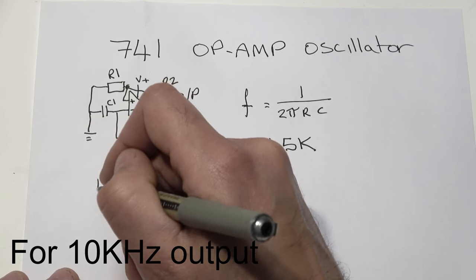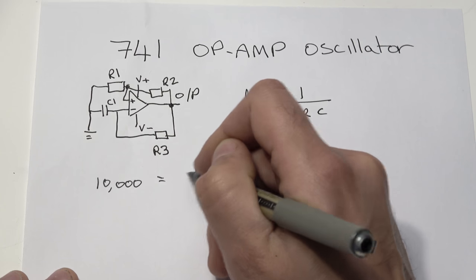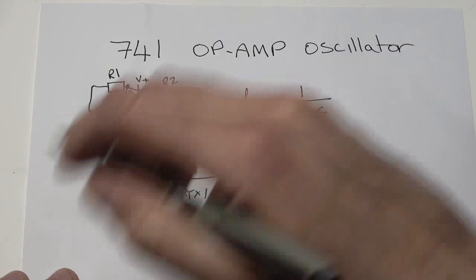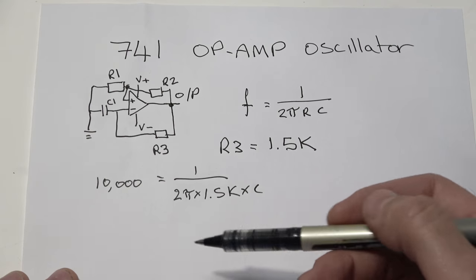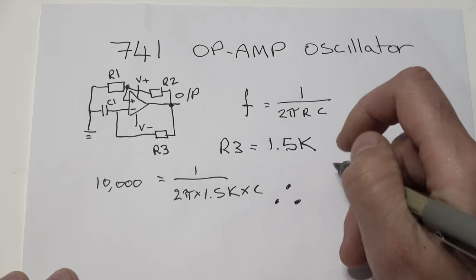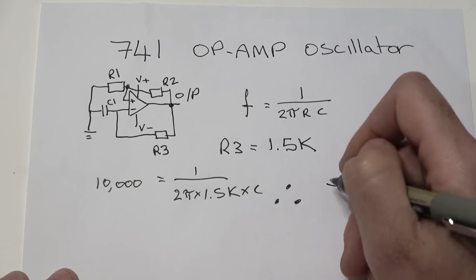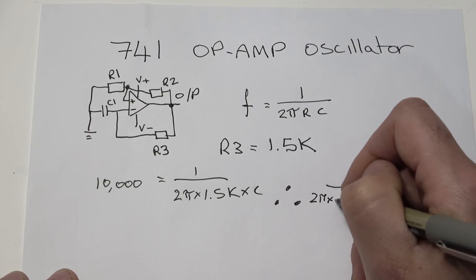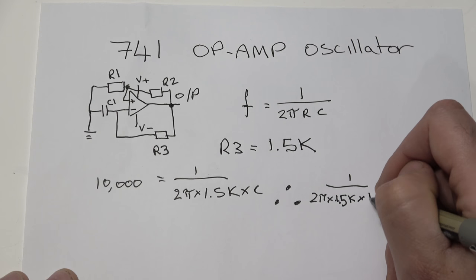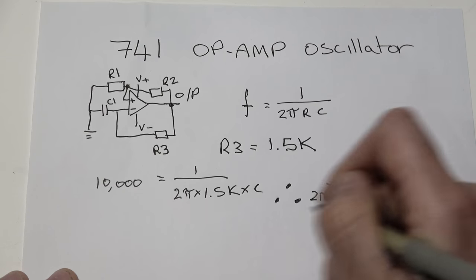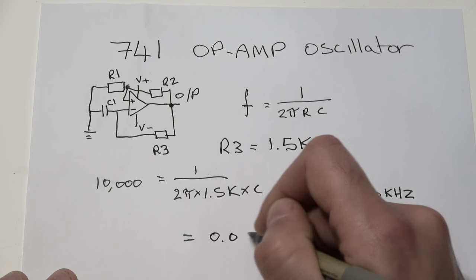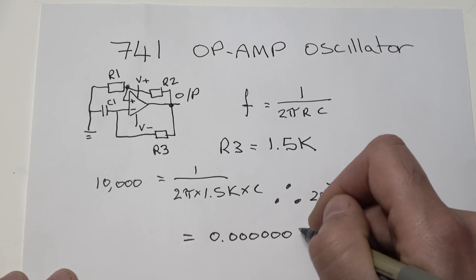Then we can put these figures into our formula. So it's going to be 10,000 equals 1 over 2 pi times 1.5K times the unknown capacitance. Then we can transpose this. We'll shift this stuff over here times the 10,000 by it, and then we'll cancel the 1 out by putting it onto this side. And then we'll end up with 1 over 2 pi times 1.5K times 10 kilohertz.